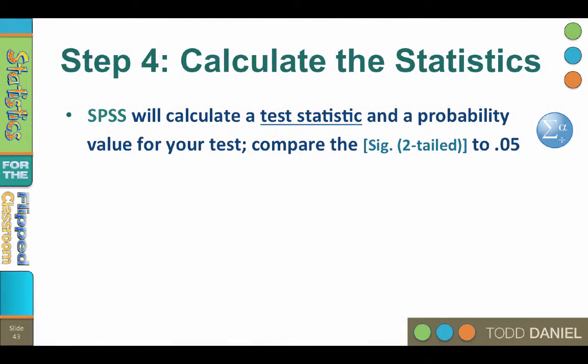The software will calculate a test statistic, also known as an observed value or an obtained value. The software will also calculate an exact probability of obtaining this test statistic and report it as a significance value.